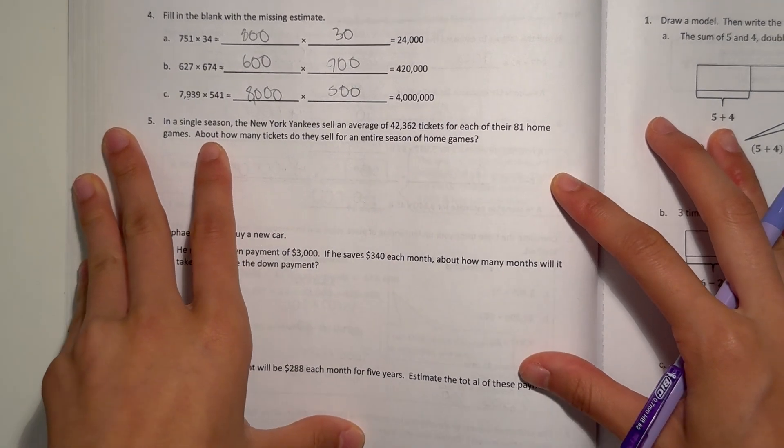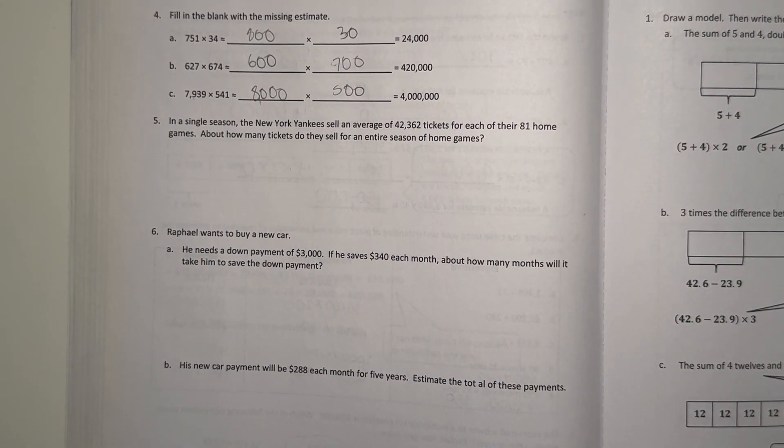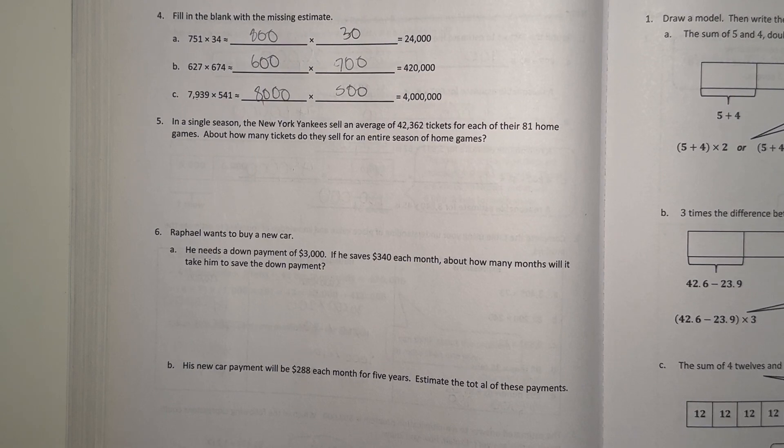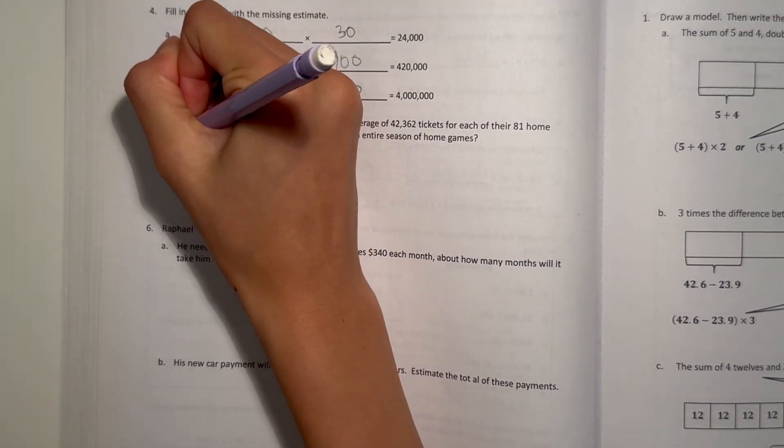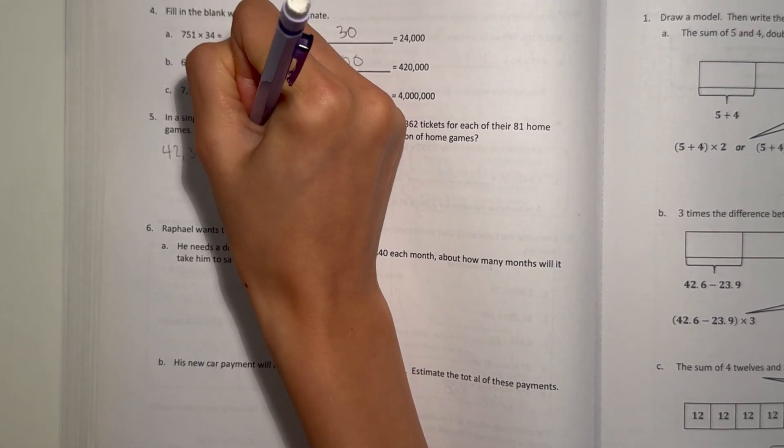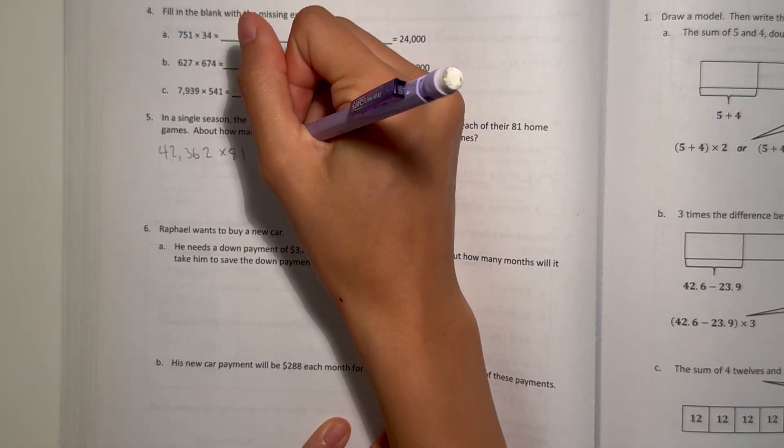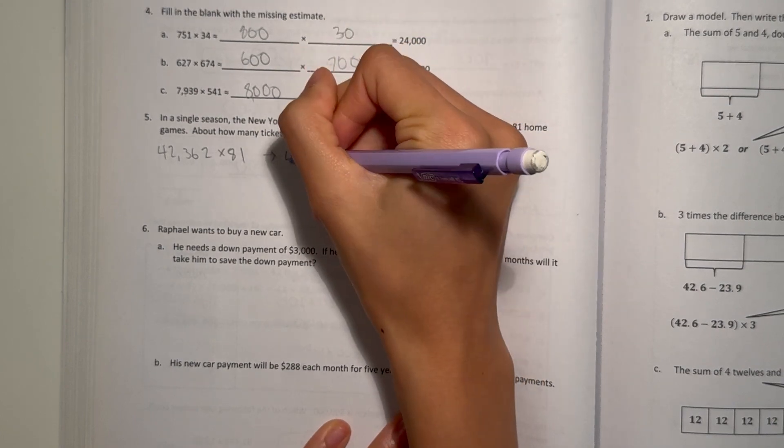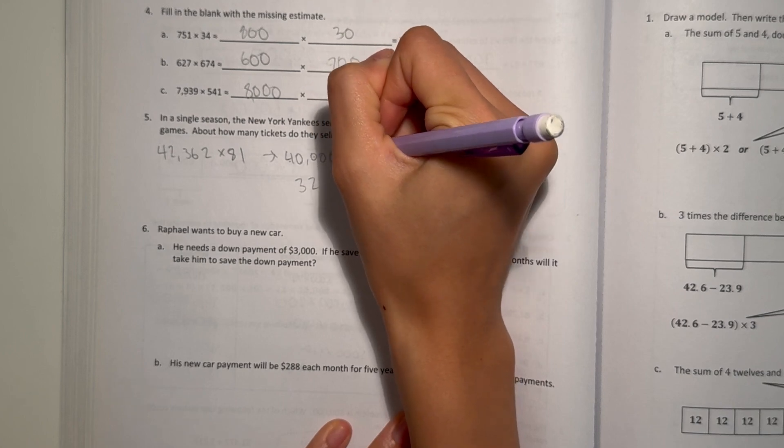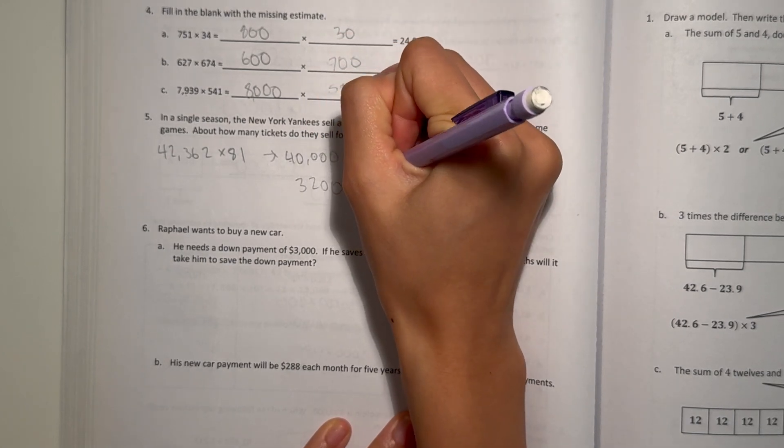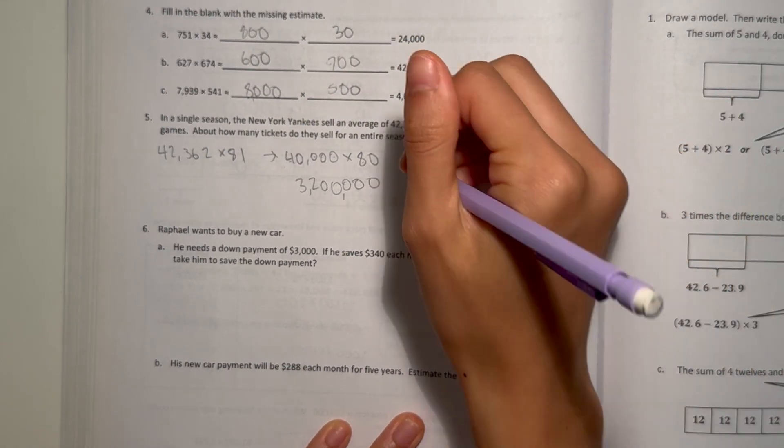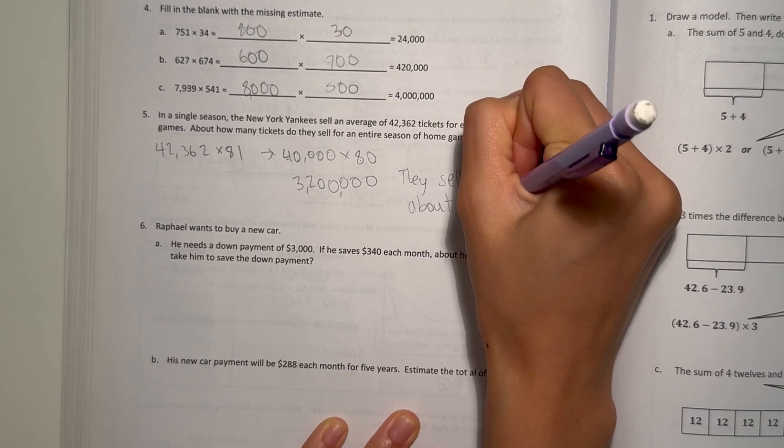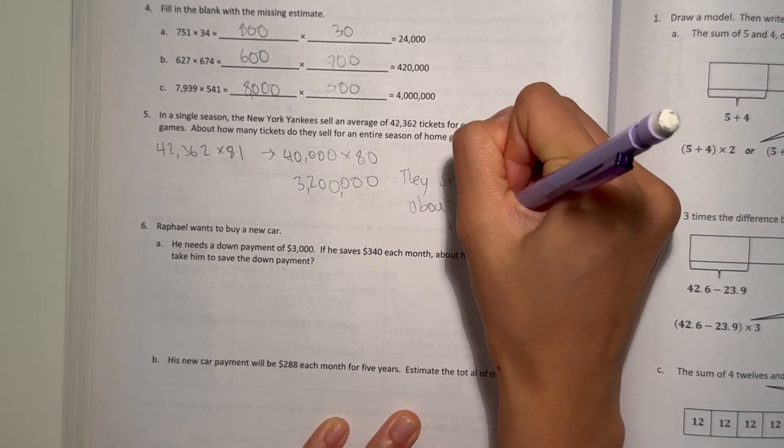Number 5. In a single season, the New York Yankees sell an average of 42,362 tickets for each of their 81 home games. About how many tickets do you sell for an entire season of home games? We have 42,362 × 81 home games. That would round to the nearest ten thousands, that would be 40,000 × 80. 4 × 8 is 32, but then plus 1, 2, 3, 4, 5 zeros. Our answer would be 3,200,000. That means they sell about 3,200,000 tickets for the whole season.